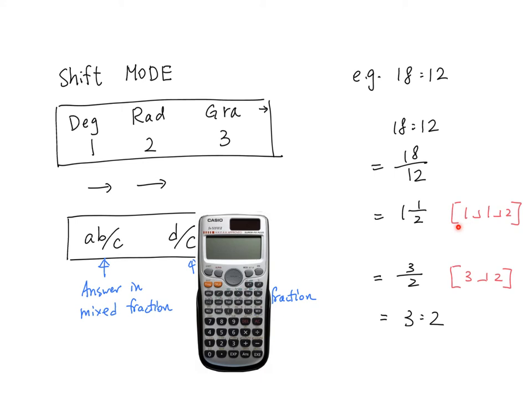If you press it back to the calculator and then you press shift abc, you will get 3 over 2 and then you will get 3 to 2.